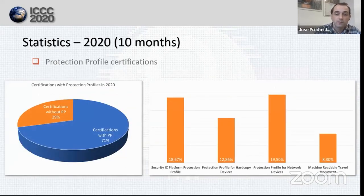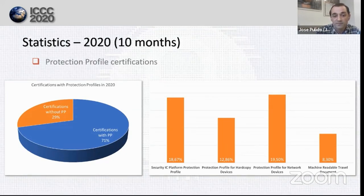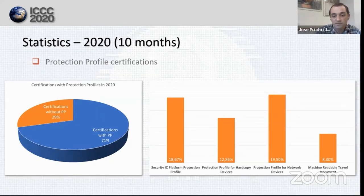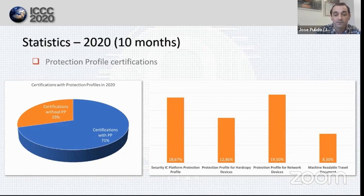The vast majority of certifications this year were protection profile compliant — 71%. That is a big number. We can definitively say that the use of PPs has settled in the certification industry and it doesn't seem that trend is going to change soon. In the chart on the right side, you will find the most used protection profiles in 2020. The most used PP this year is the collaborative protection profile for network devices with almost 20%, almost tied with the security IC platform protection profile. The protection profile for hard copy devices and the protection profile for machine readable travel documents are one more year in the top four.